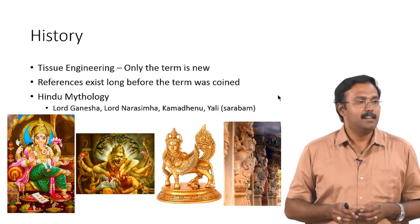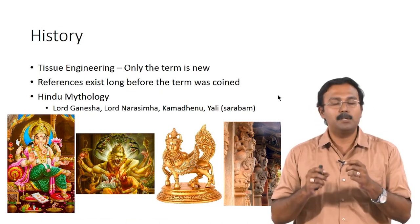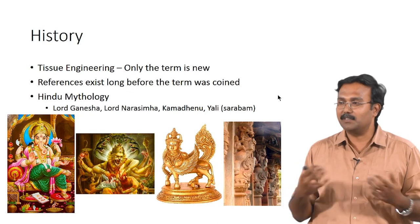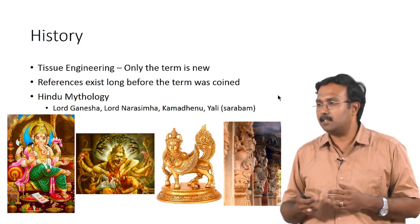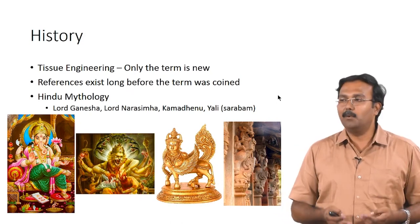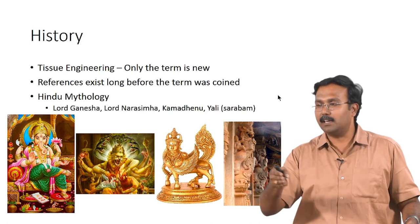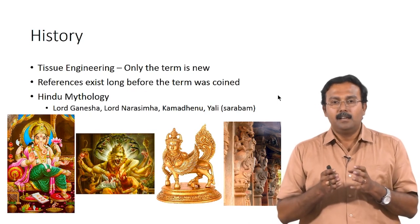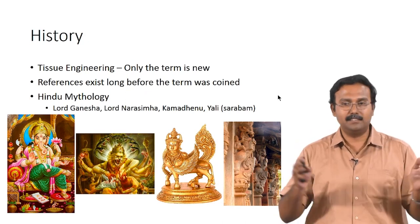We will start with the history of tissue engineering. This is something you would see in any tissue engineering book — an image of a chimera — to say that people have been dreaming of enhancing organs and tissues. I always felt we should start not with Greek mythology, but with our own mythologies. This is something we have all seen, and I would also look at other mythologies to show how similar our imaginations have been across cultures.